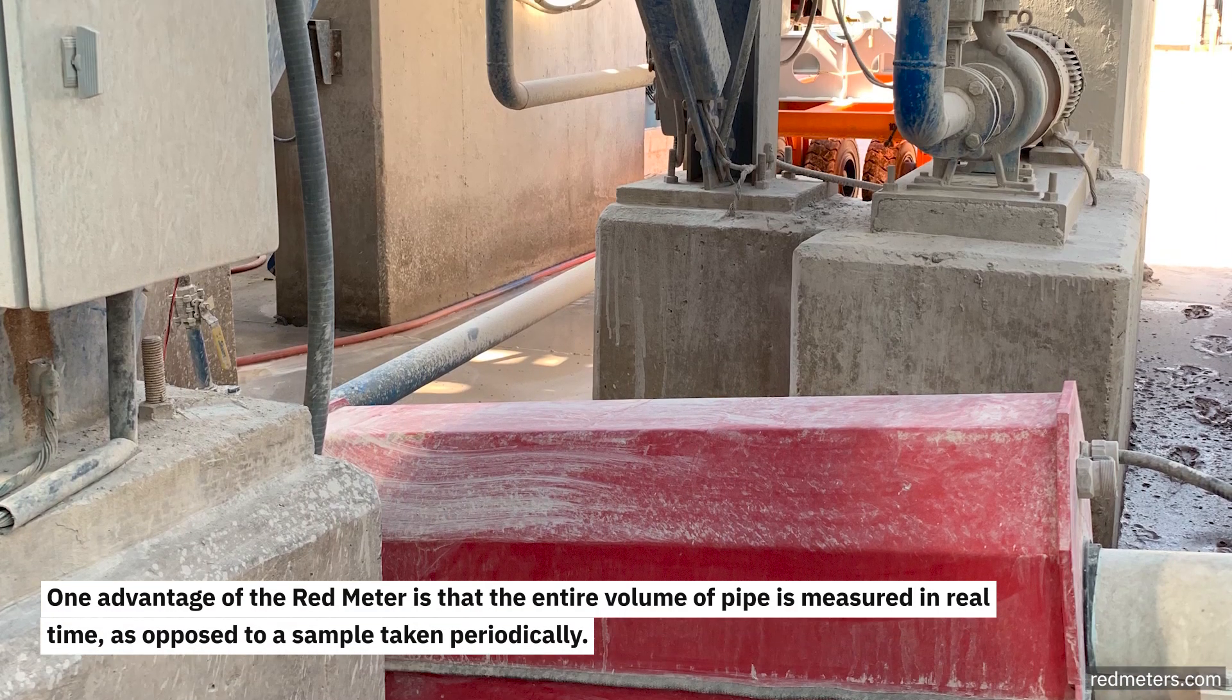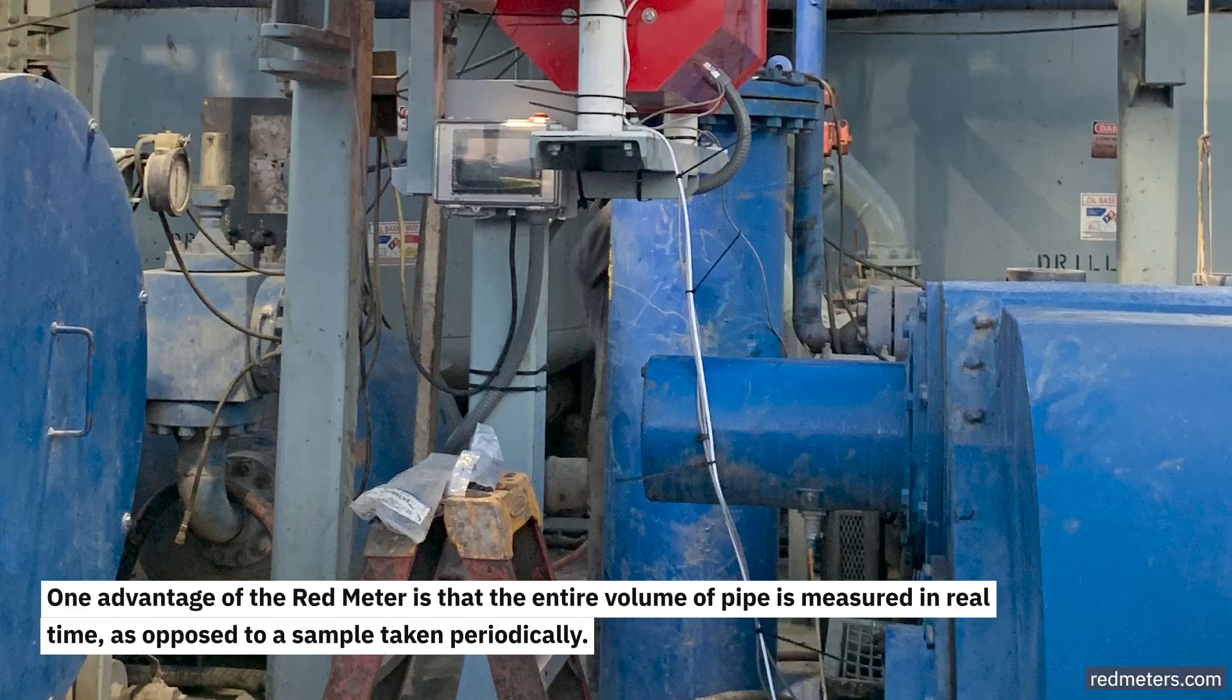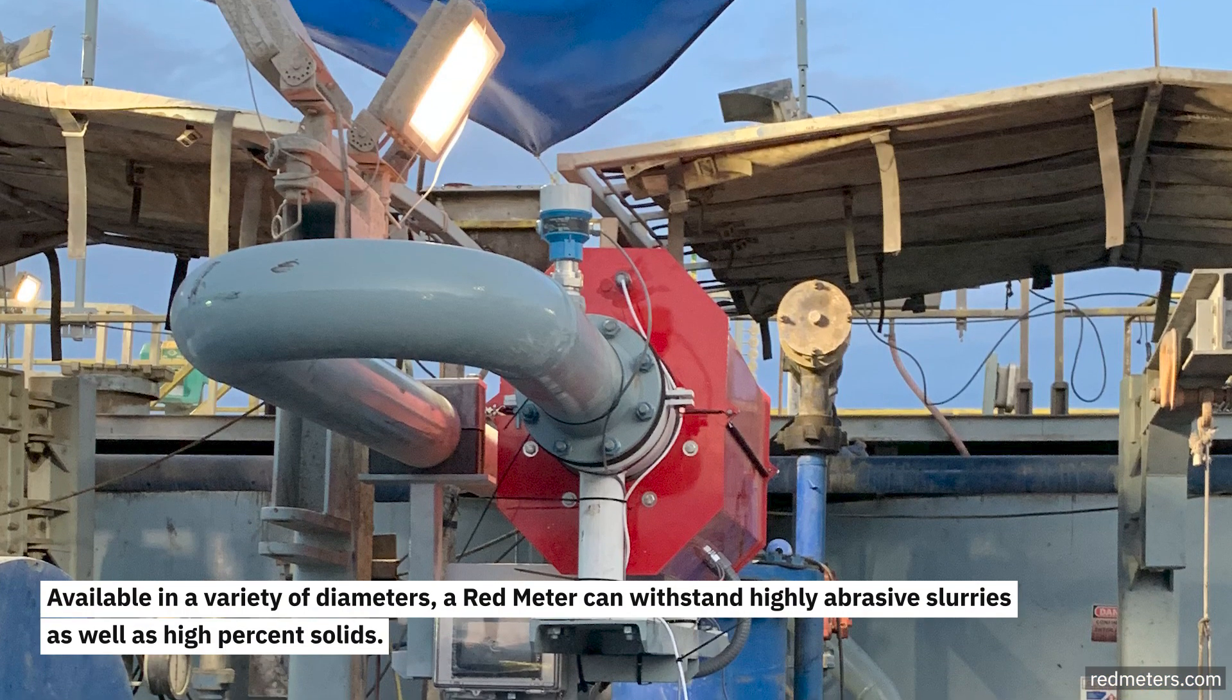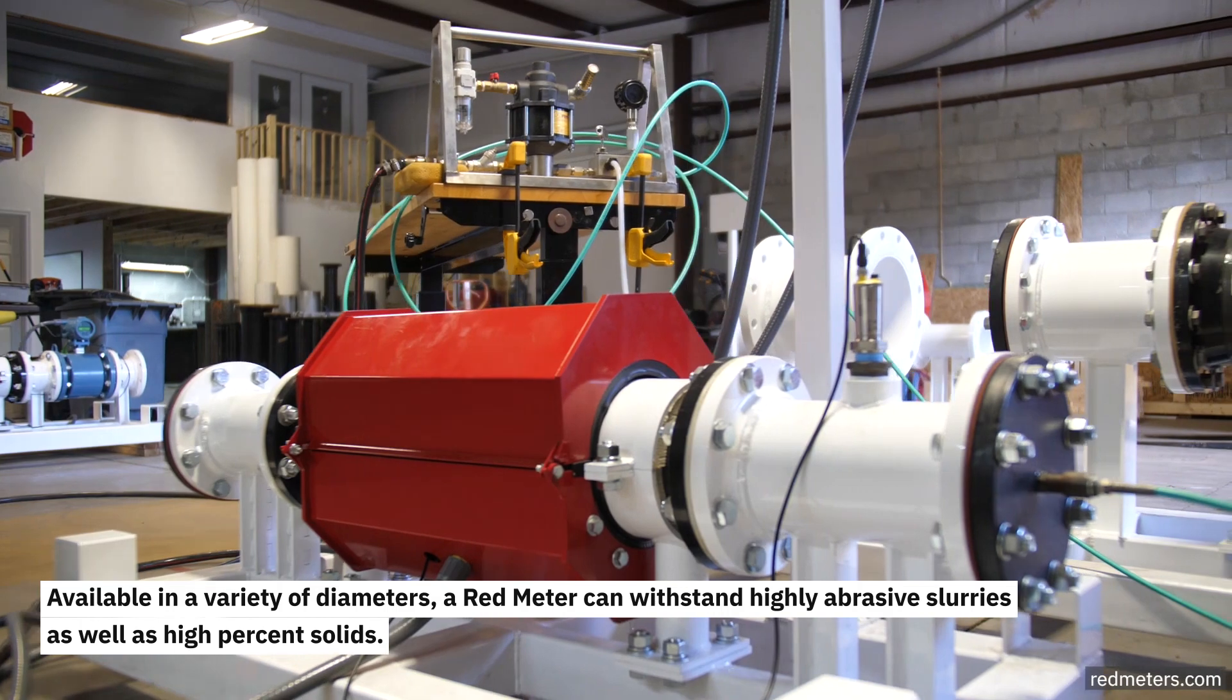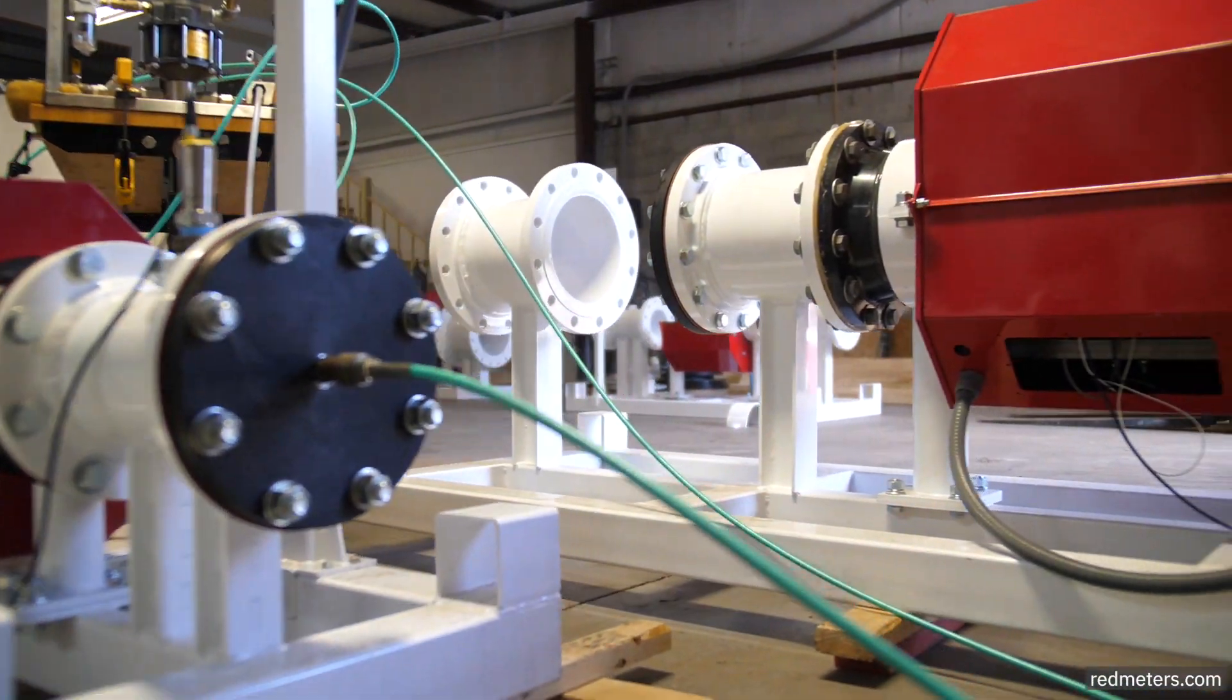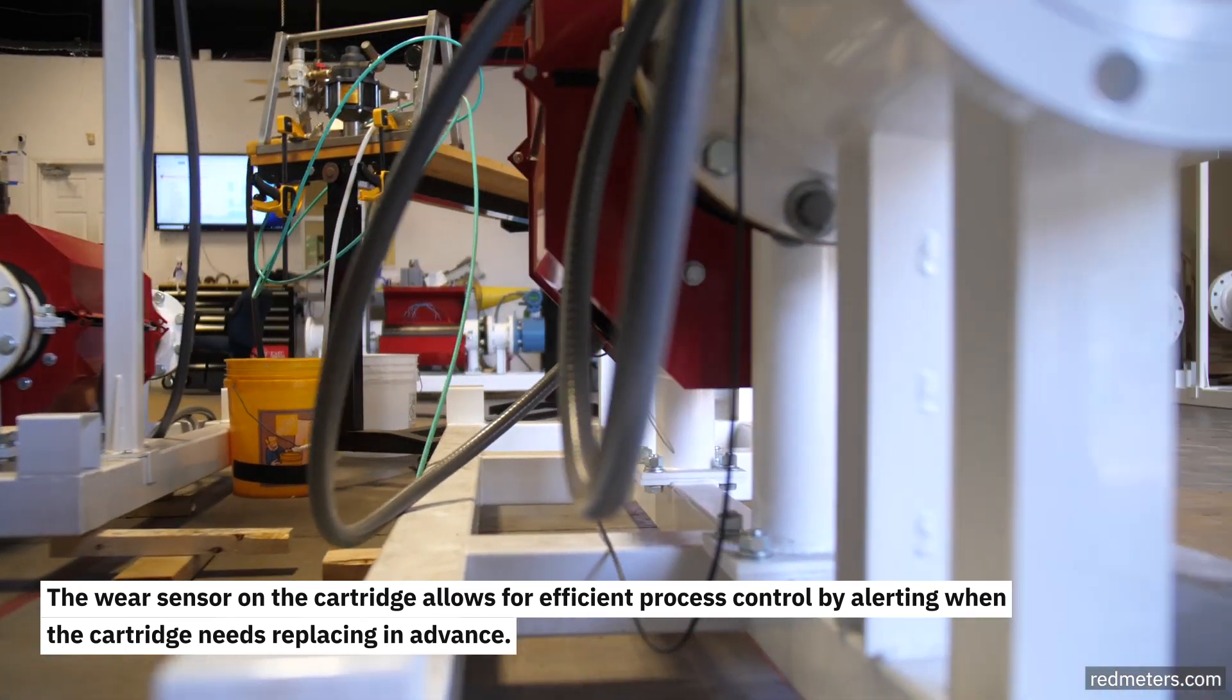One advantage of the Red Meter is that the entire volume of pipe is measured in real time, as opposed to a sample taken periodically. Available in a variety of diameters, a Red Meter can withstand highly abrasive slurries as well as high-percent solids. The wear sensor on the cartridge allows for efficient process control by alerting when the cartridge needs replacing in advance.